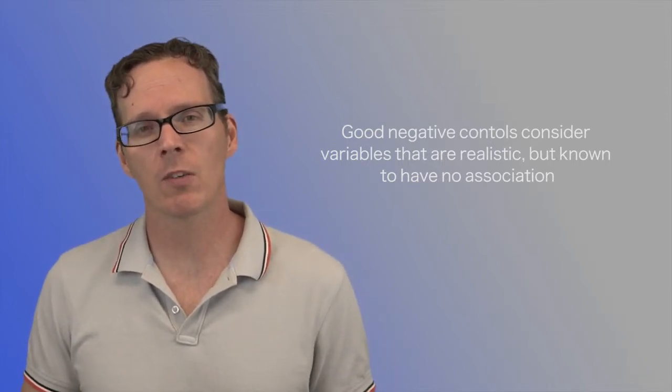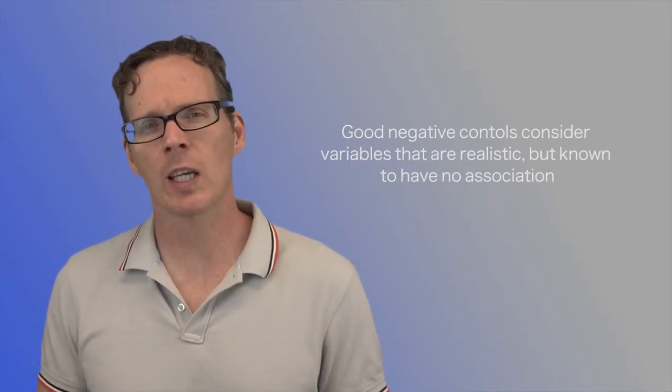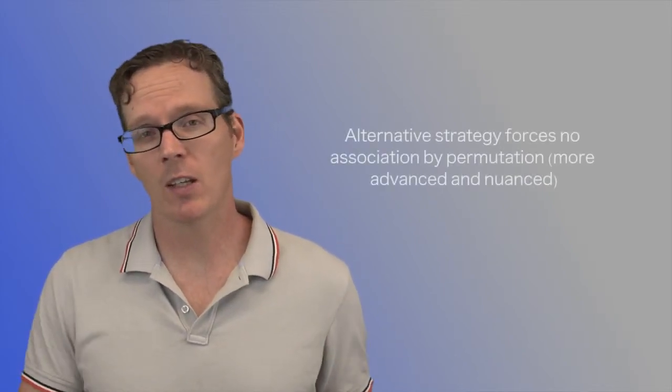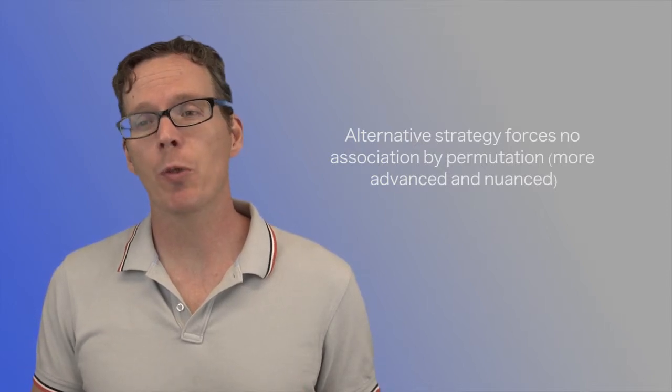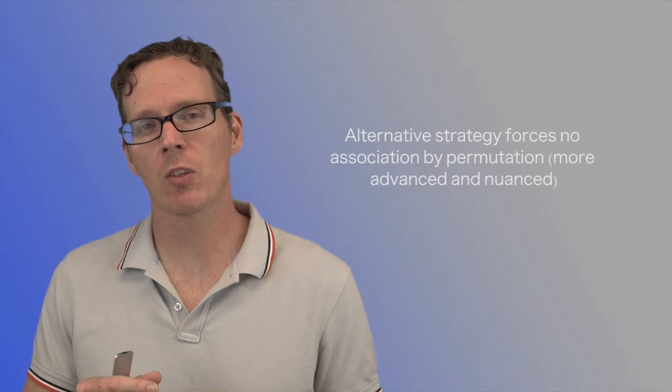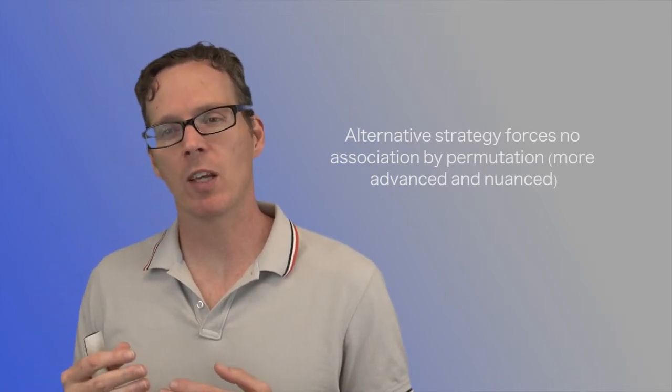If there's one criticism of negative control, it's often very hard to find something where you know for sure there can't possibly be an effect. So another strategy that people employ, rather than executing things like negative controls, is they do things like permutation tests. They actually formally break the association by permuting one of the variables so that there can't be an association. They've broken it. That's a little bit more of an advanced topic, but the idea is quite similar.